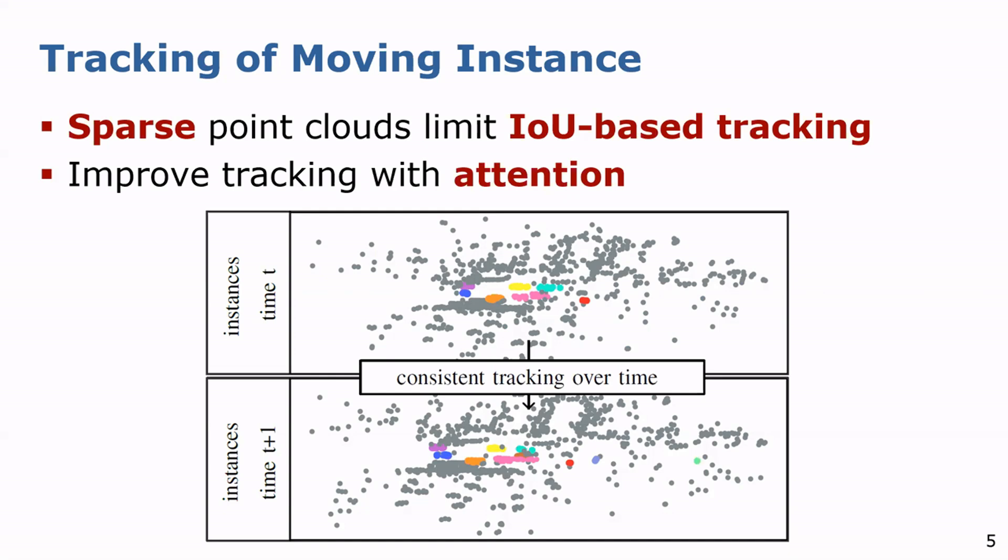To overcome this limitation, we propose a transformer-based architecture which extracts valuable instance features from sparse and noisy point clouds. To further enhance the performance, we include the appearance and geometric features in the tracking.